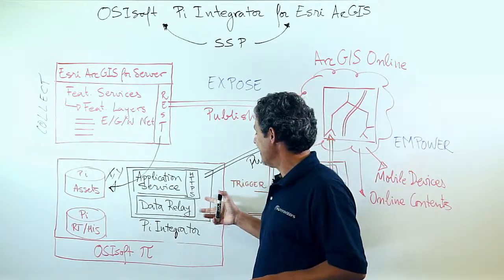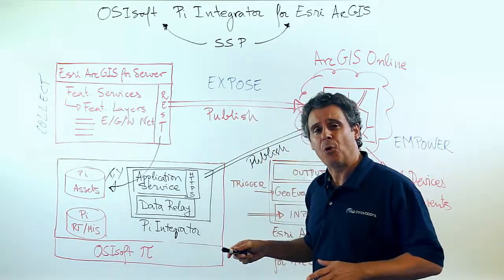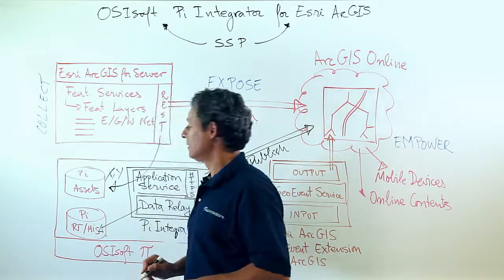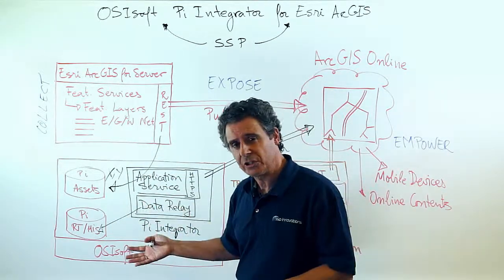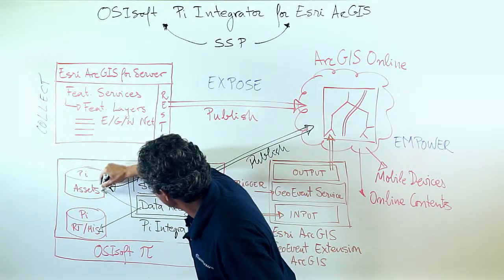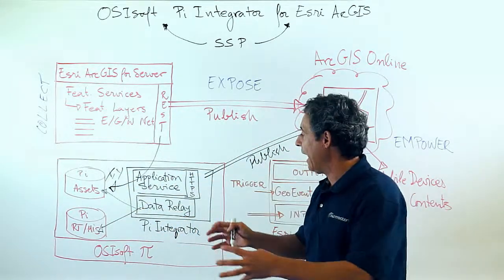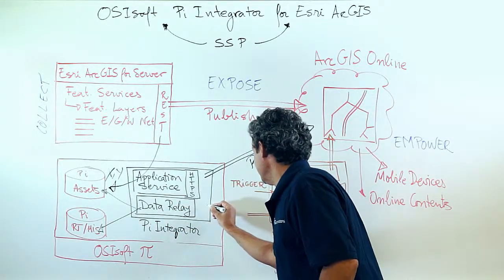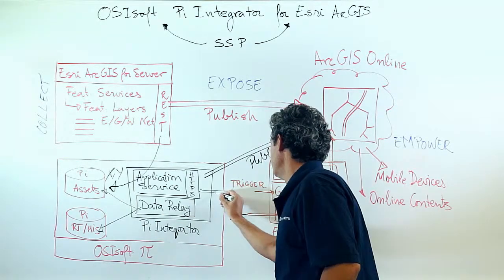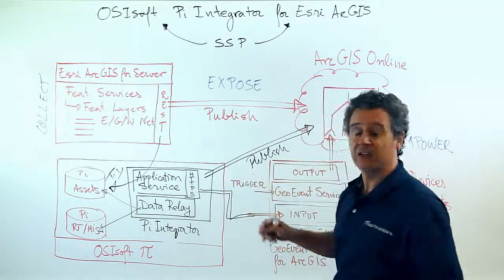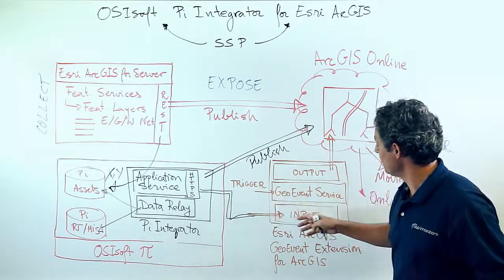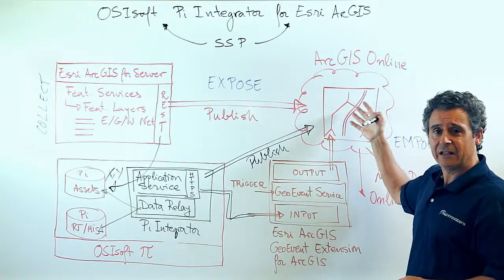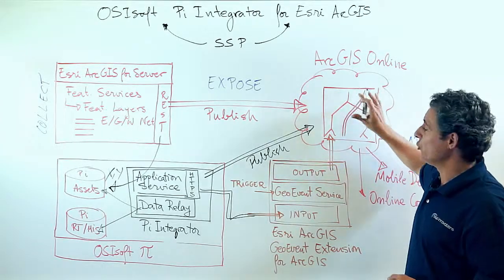Furthermore, the data relay is a component that is periodically polling data from the real-time database and from the historical database, associating that data to the corresponding assets, and then manipulating it through triggers and events in a way that it fits — in this case through HTTPS — the mechanism to make the geo-event service populate the data real-time on your maps.